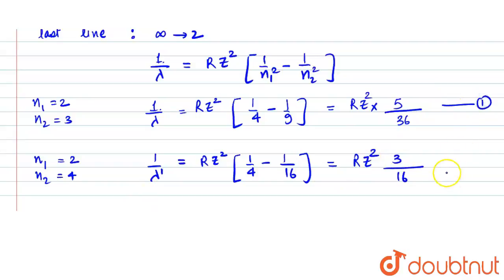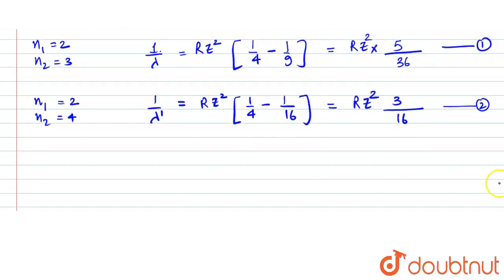Now we can divide these two equations, equation 1 by equation 2. That is (1/λ)/(1/λ') which gives us λ'/λ. The Rz² terms cancel out, leaving us with (5/36) divided by (3/16), which equals (5/36) times (16/3).